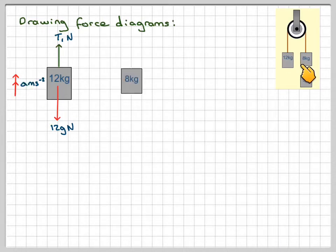For the 8 kilogram block, which is this one, we've got the T1 tension going upwards, which is the same as this one. And then going downwards, we've got a weight of 8g Newtons. And also we've got the tension of the string connected to the 8 kilogram block.